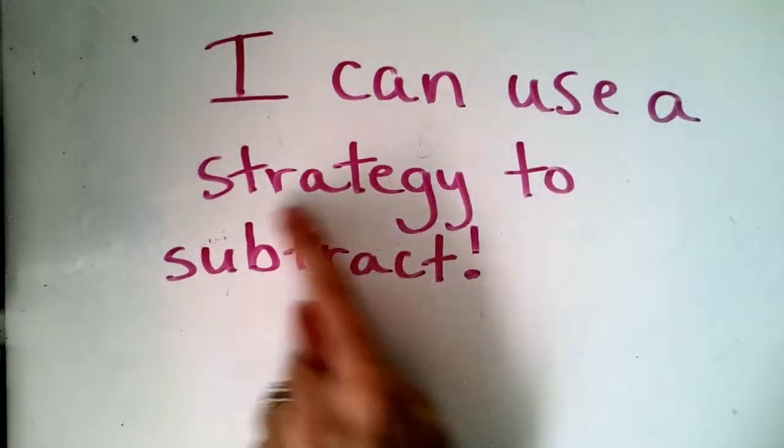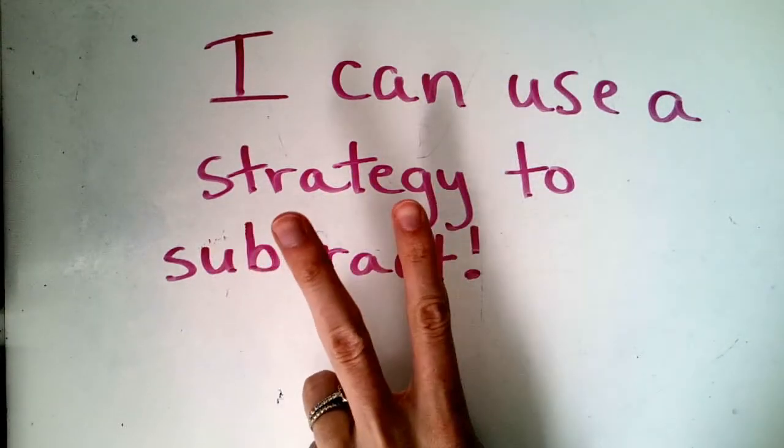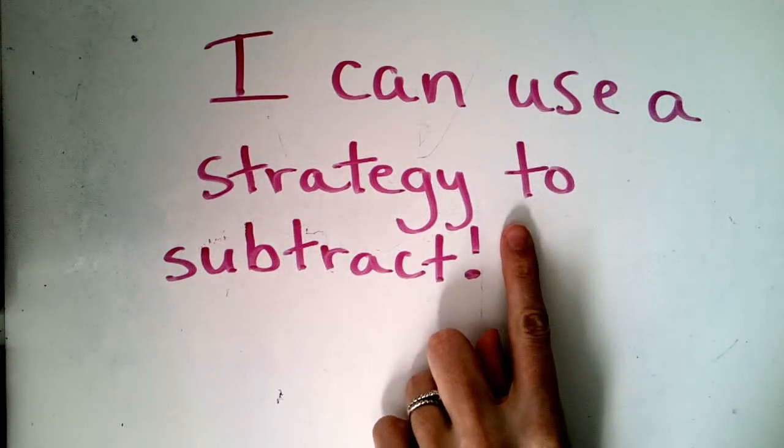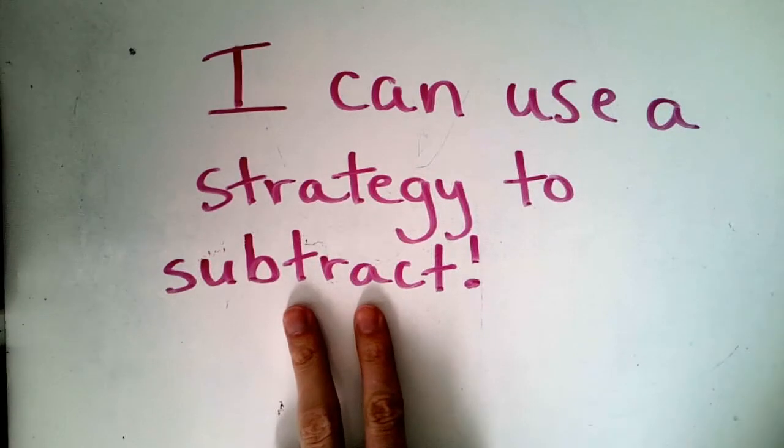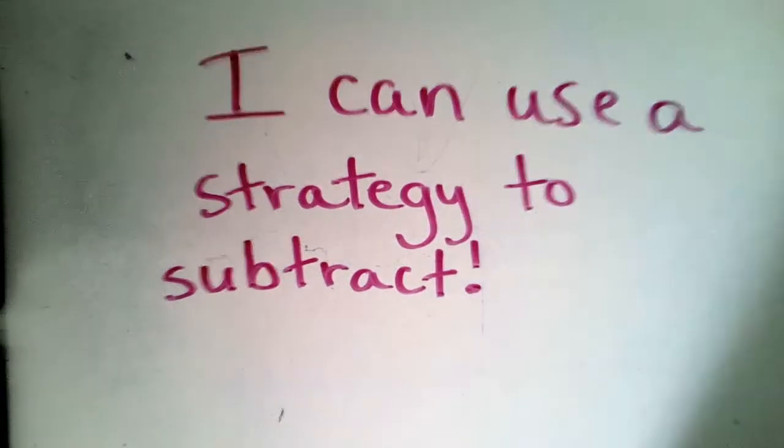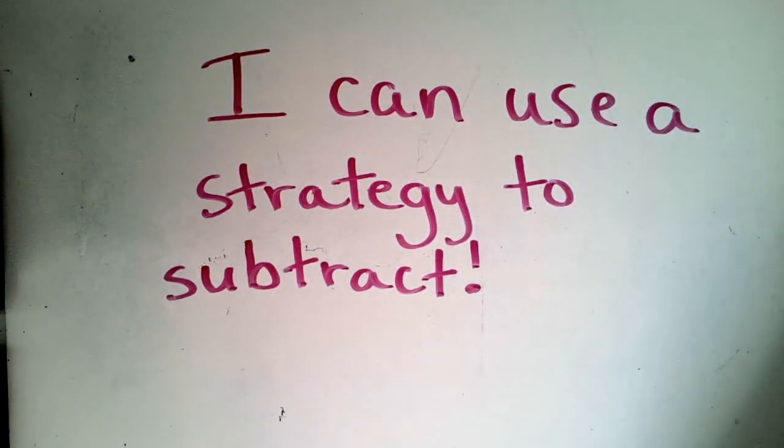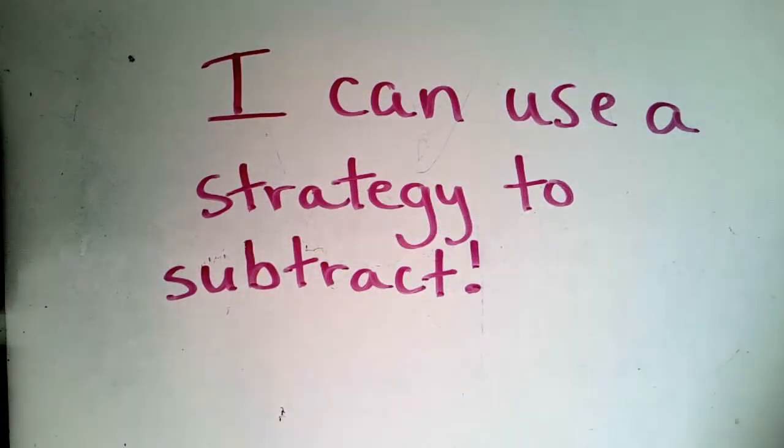Today, our I can statement is going to stay pretty similar to what it has been. It says, I can use a strategy to subtract. We have been practicing two main strategies lately: the picture strategy or a drawing, and the number bond strategy. Now, your teachers have been telling you for a while which one you have to practice, but today is the day where you get to choose which one works best for you. We're going to review both strategies together.